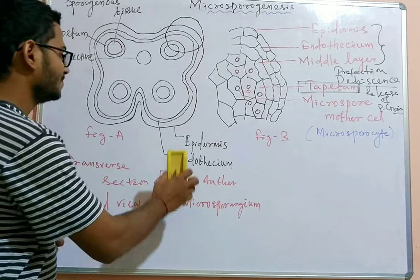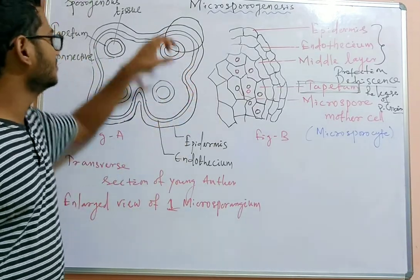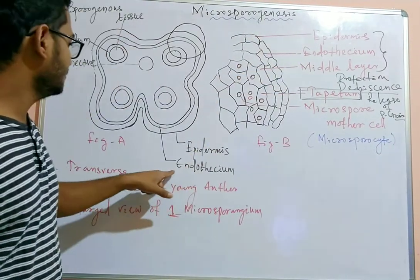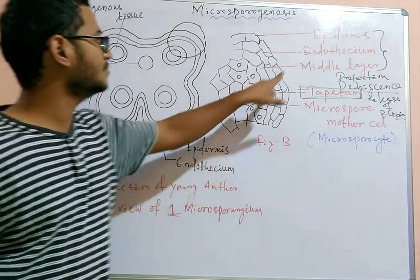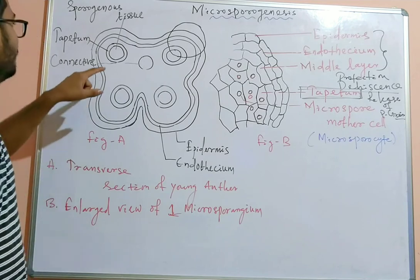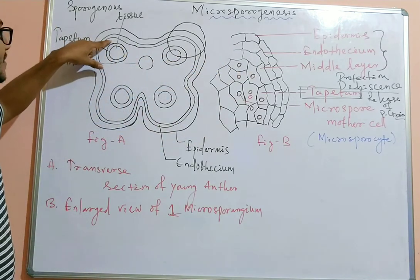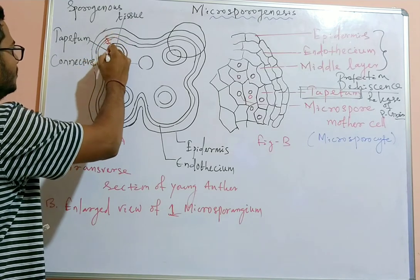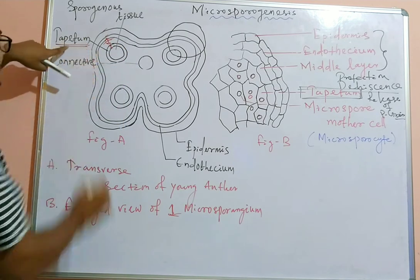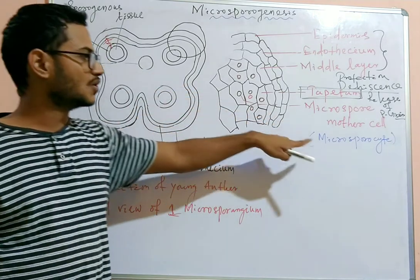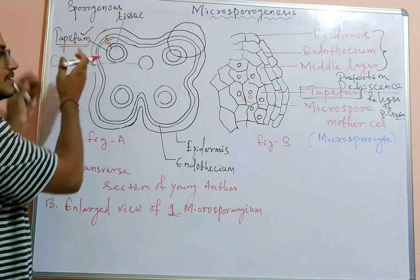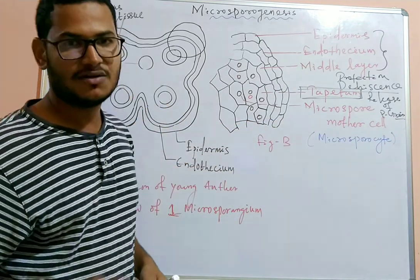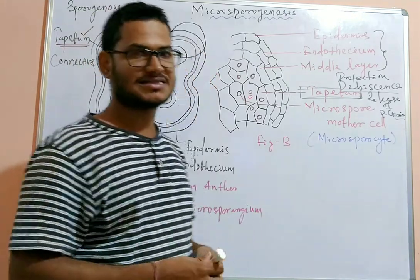Looking at the figures in detail: the outermost region is the epidermis, the next inner layer is the endothecium, followed by the middle layer, and finally the tapetum. The tapetum supplies essential nutrients for the growth of the microsporocytes to form the pollen grain. The tapetum cytoplasm is dense due to the presence of nutrients that are supplied to the microspore mother cell for its development into a pollen grain.